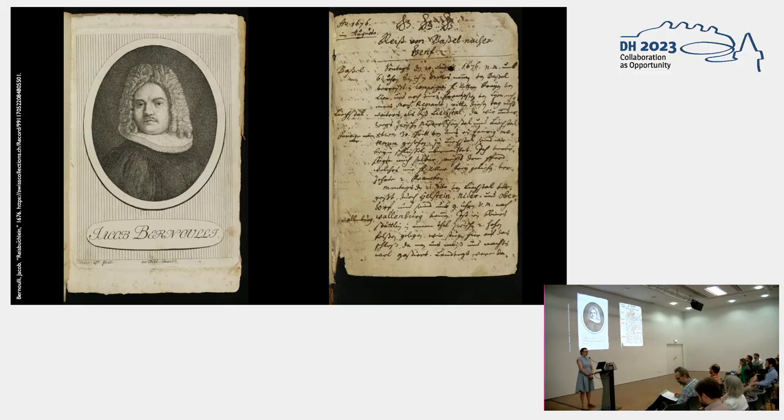Jakob Bernoulli is a Swiss mathematician who traveled throughout Europe and Switzerland in the years 1676 to 1683. During his time he kept notes of his travel in his travel journal, the Reissbüchlein.